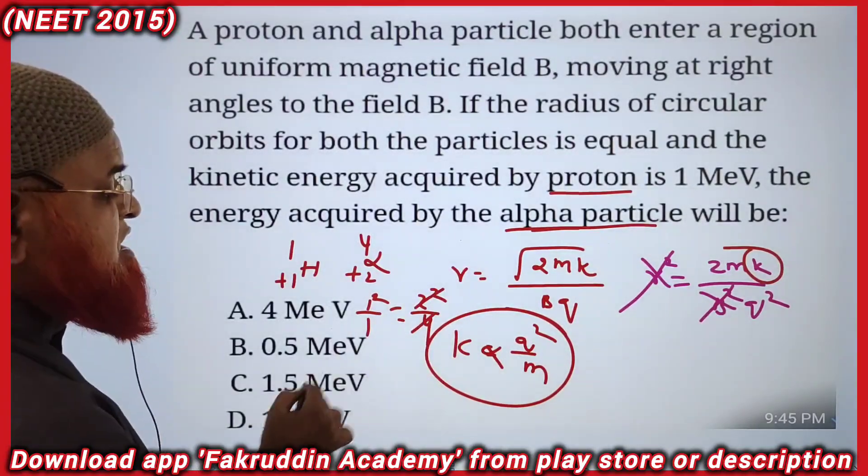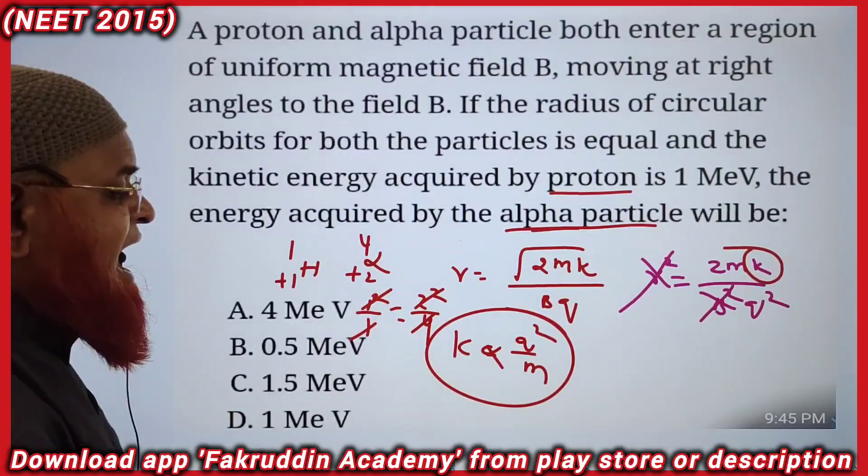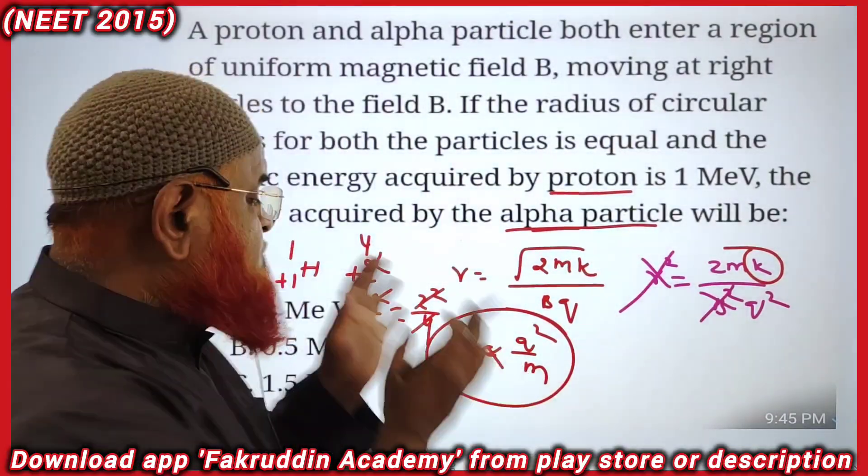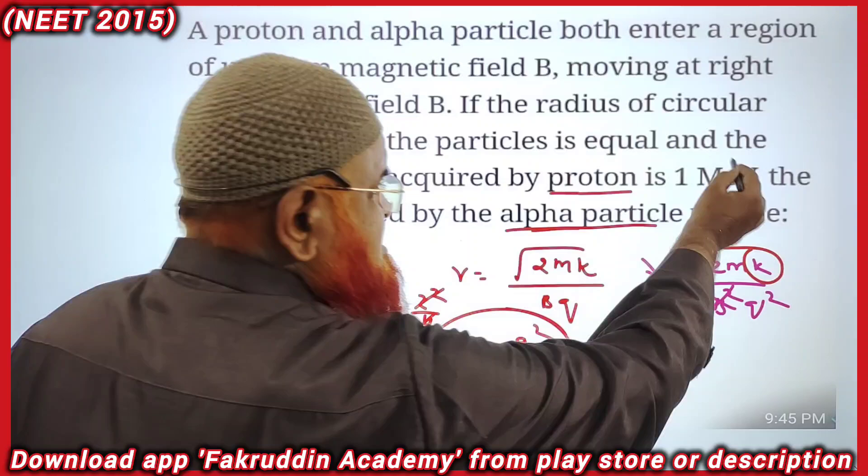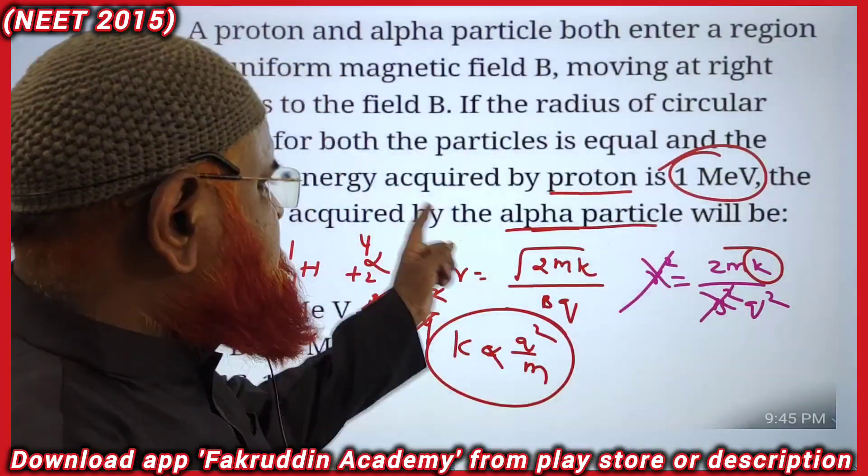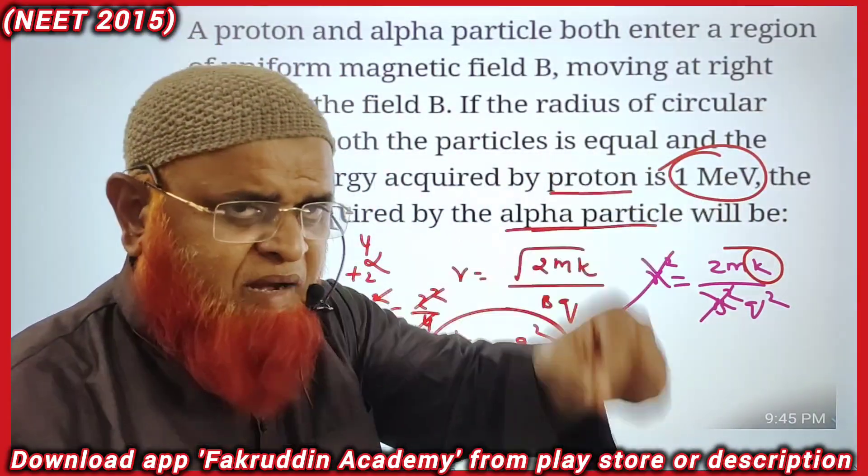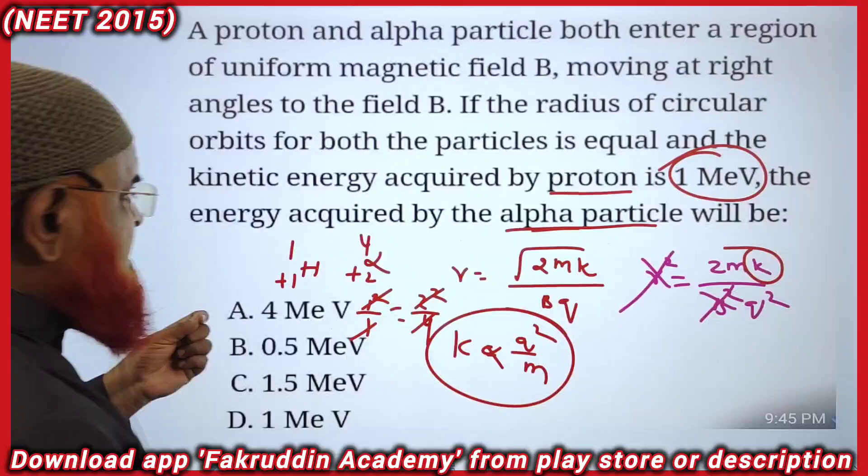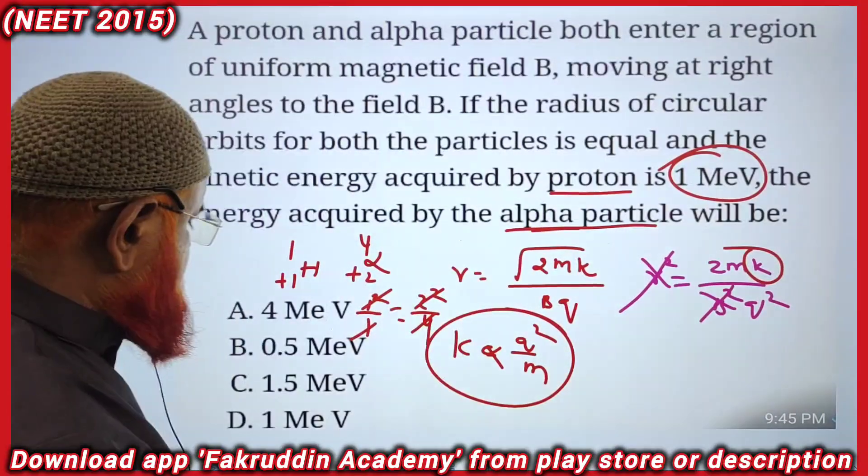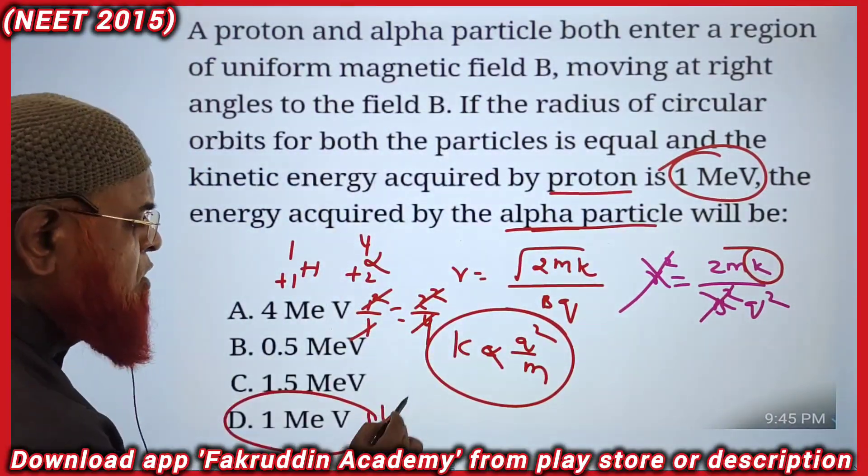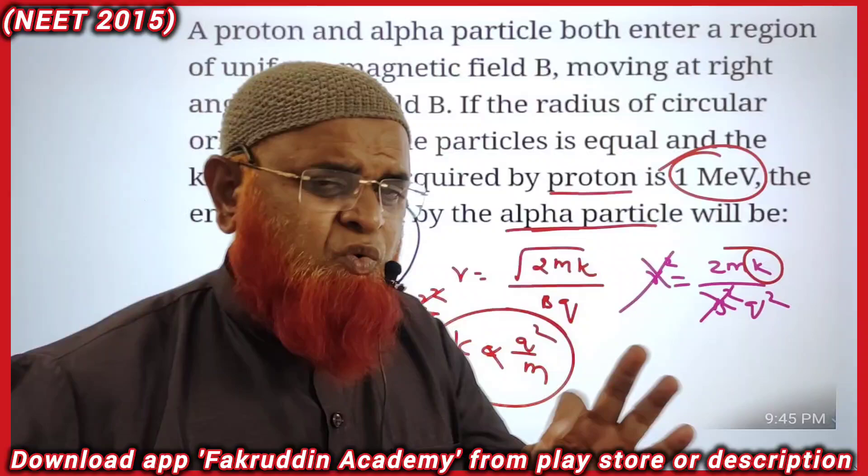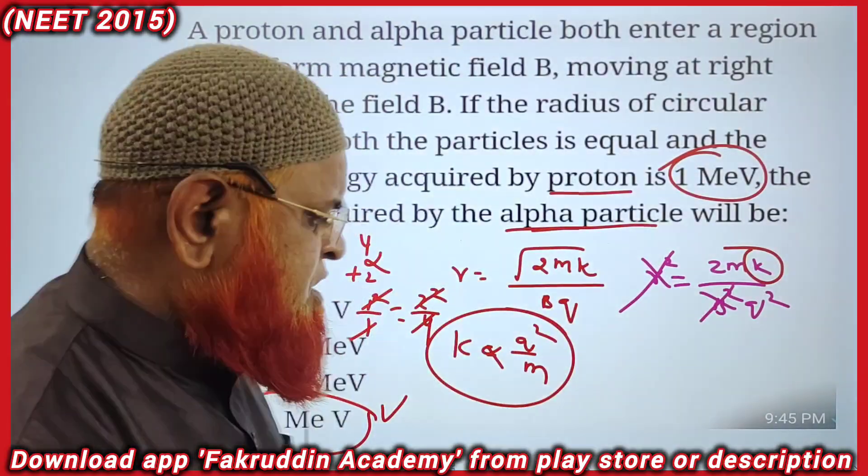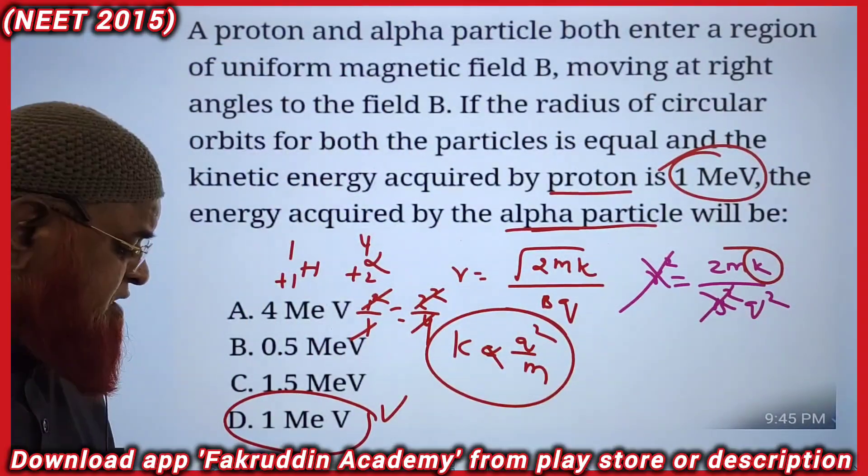That means the ratio of kinetic energies for both are same. The answer is going to be same. If for proton the kinetic energy is 1 million electron volts, even for alpha particle it is 1 million electron volts. This is where students get most confused regarding this problem. Hope you have enjoyed this one, thank you very much.